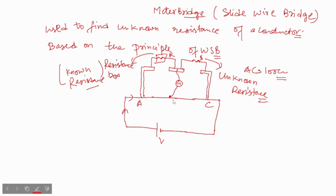The galvanometer will touch a point where its reading will be zero. What does it mean? This is the balance situation. It means R upon S will be equal to P upon Q, where P is the resistance of one part and Q is the resistance of the other part. In the case of the balanced Wheatstone bridge, R by S equals P by Q. This situation occurs at the moment where the galvanometer shows zero — meaning no current flows through it.